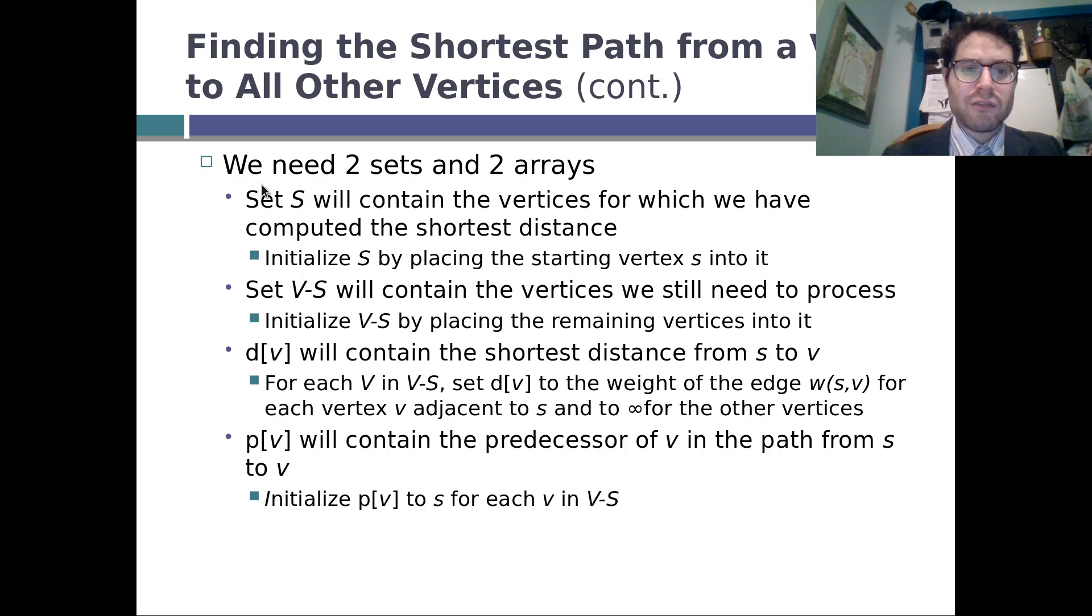So we need two sets and two arrays. Originally Dijkstra said that his sets were called S and VS. S is the set that contains all the vertices that we have figured out the shortest distance to. So we can just simply call this done. VS is all the vertices that still need to be processed. So we can call this set to do. Done and to do. Stuff we figured out the shortest distance for. Stuff that we still need to figure out the shortest distance for.